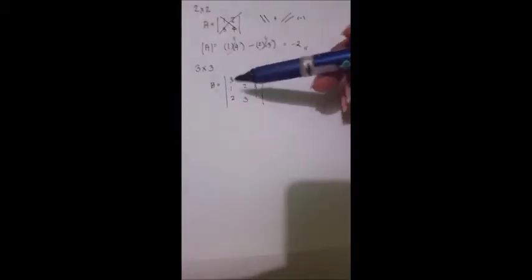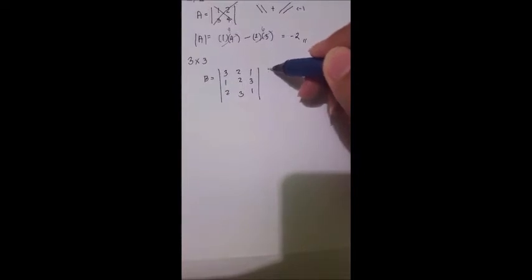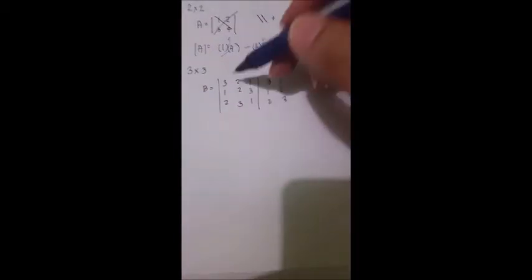So to solve for our 3 by 3 matrix, one technique is to transfer these two rows, or columns. So 3, 1, 2, 2, 2, 3, and then we will proceed to the crisscross. First, we have this one. Let's use the blue one.